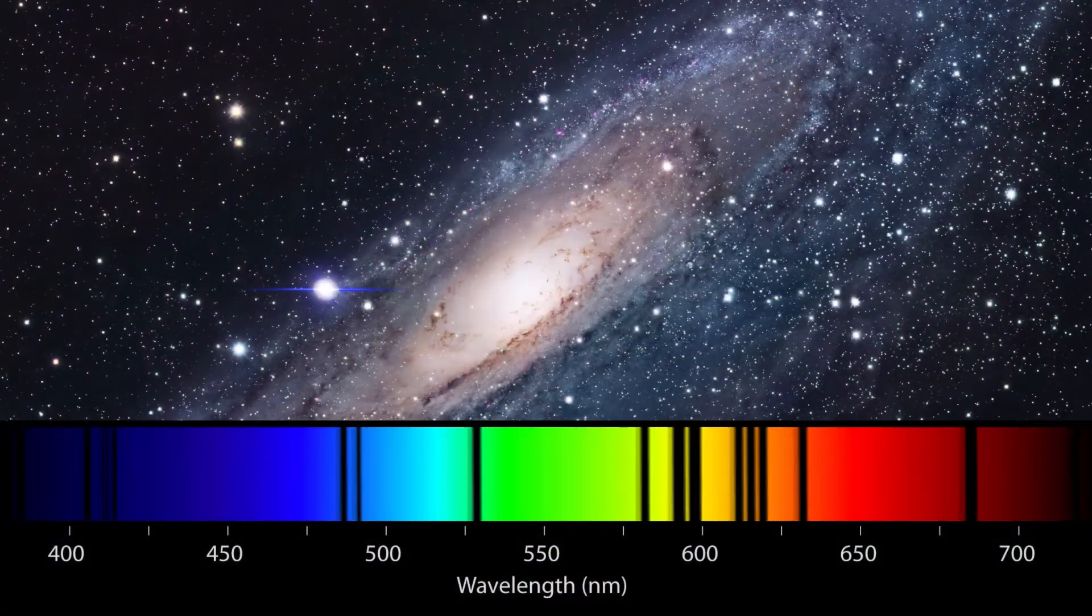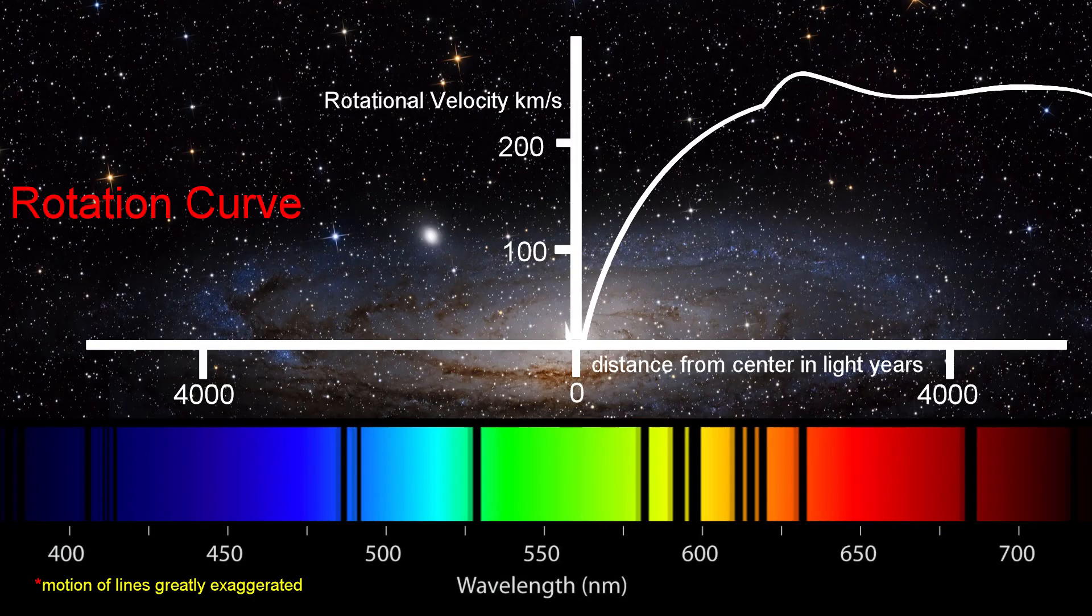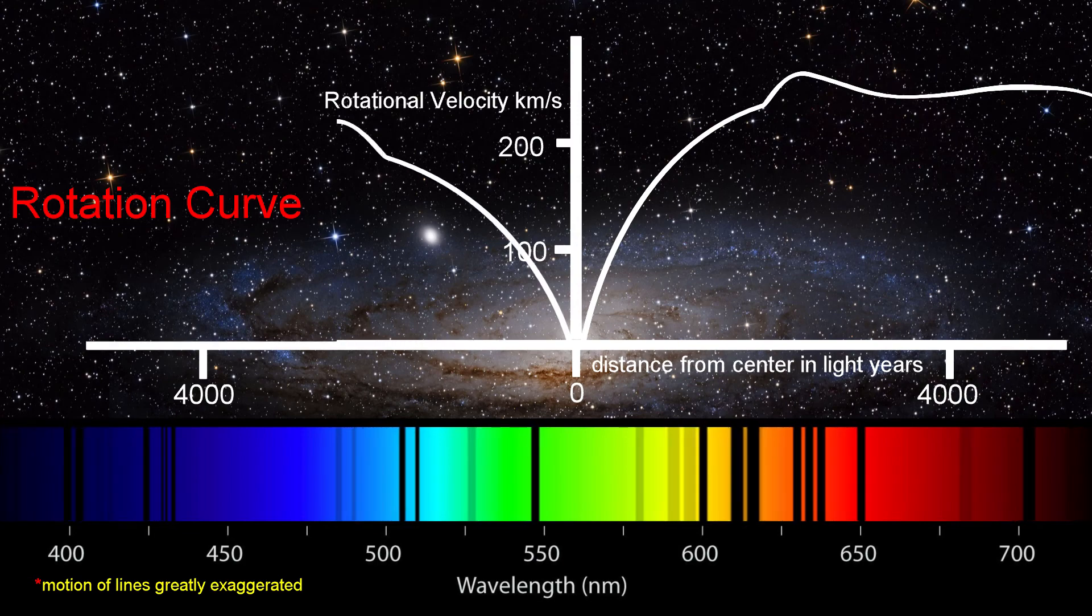Using redshift, we measure how fast parts of the galaxy are moving towards and away from us. We then develop a rotation curve and figure out the rotation period using a simple rotation formula.